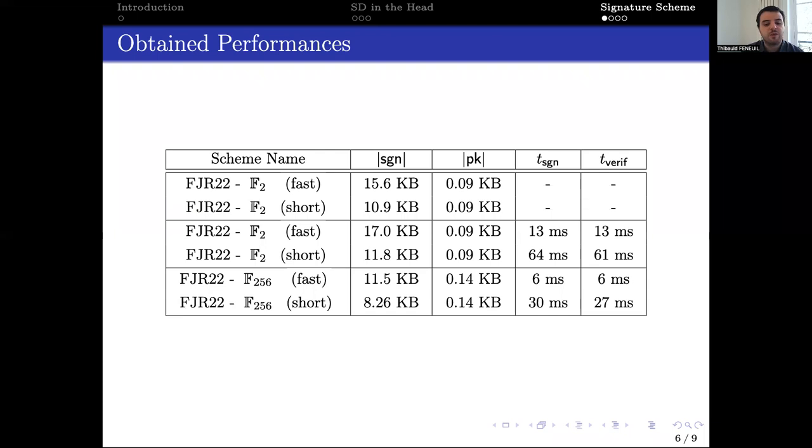We selected three parameter sets targeting a security of 128 bits. The two first sets relied on a syndrome decoding instance on the binary field, while the third one relies on a syndrome decoding instance on a larger field.